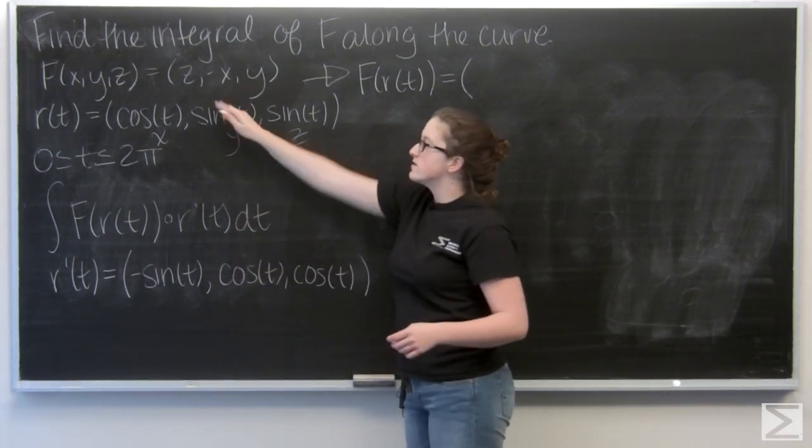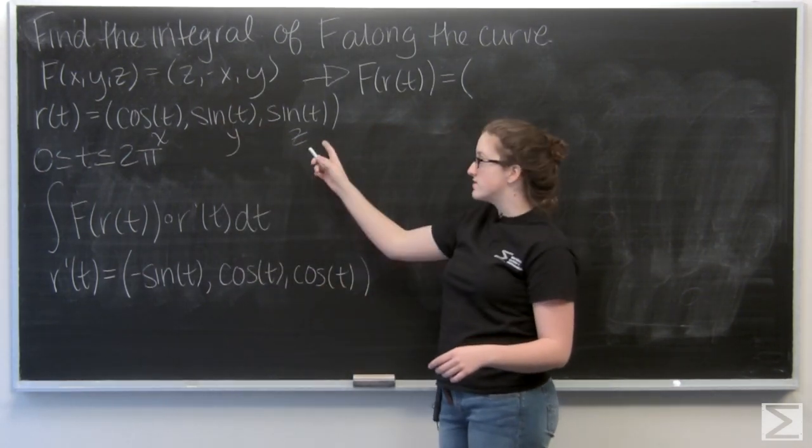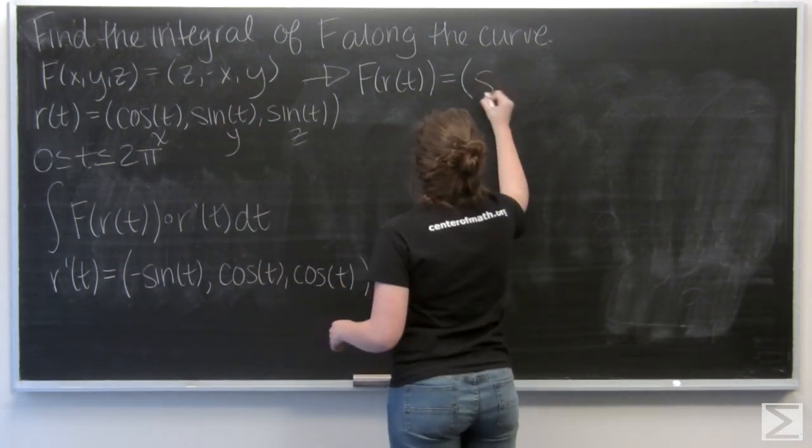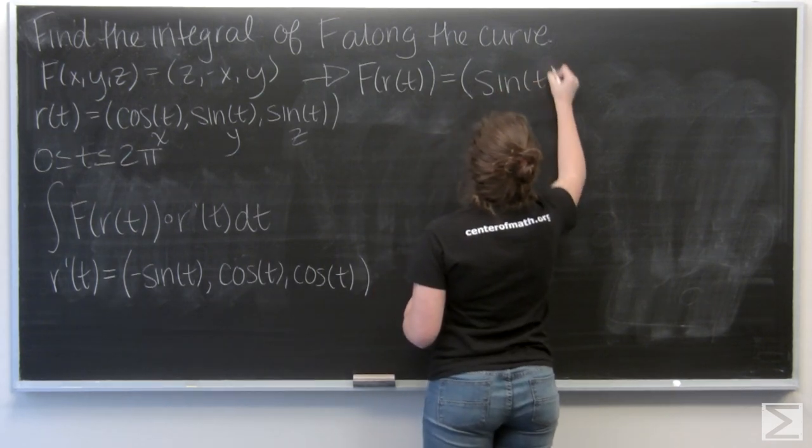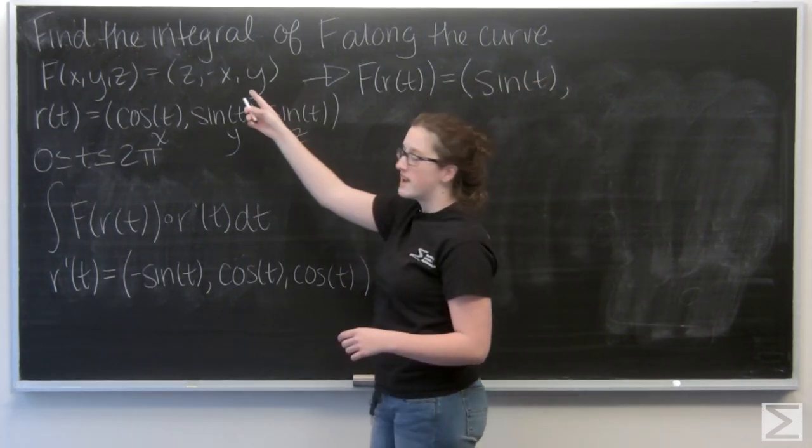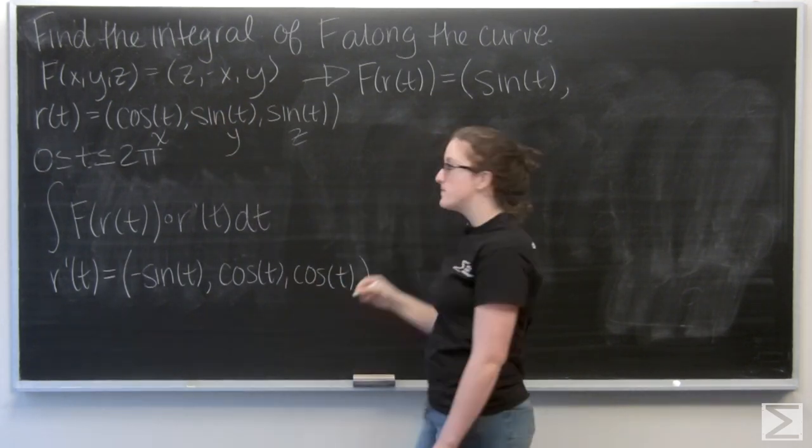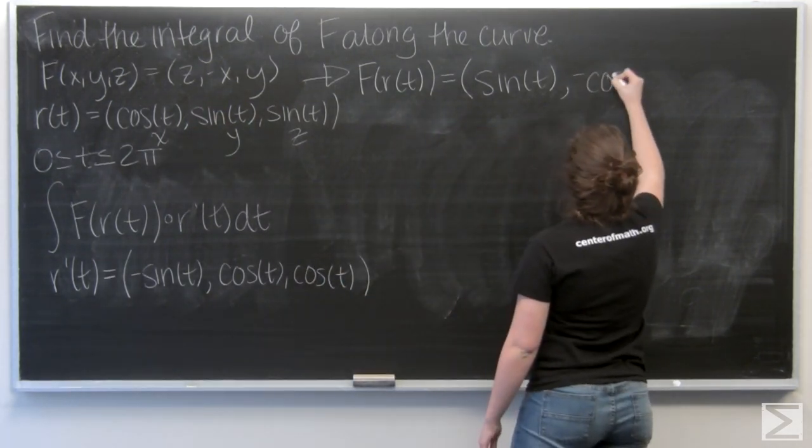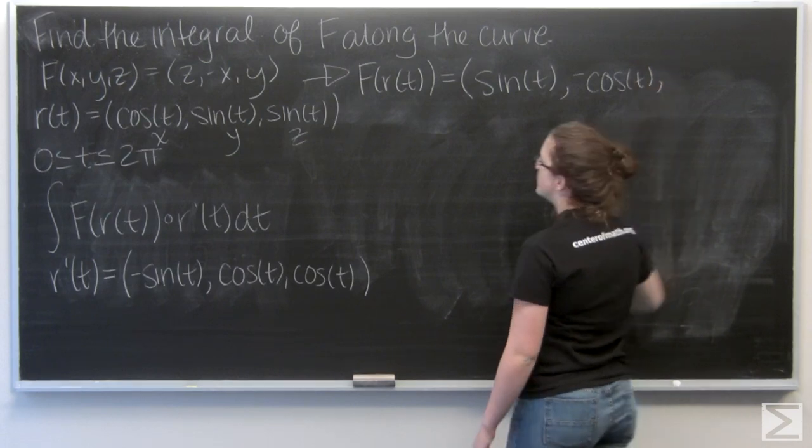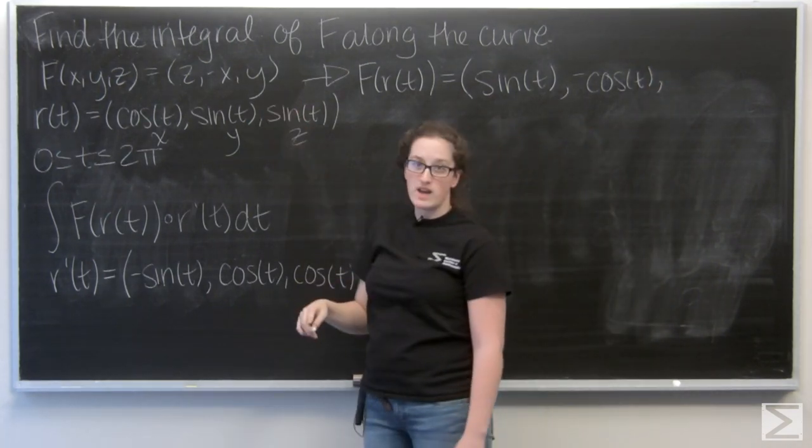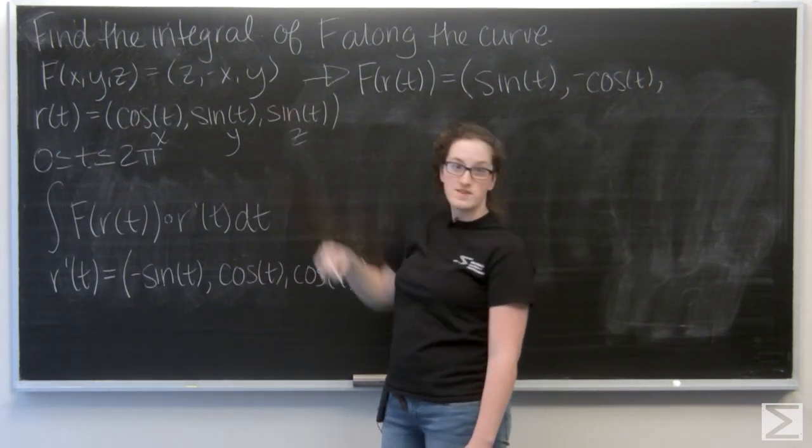So my first term in f is z, so that's just going to be sine t. My second term is negative x, so I'm going to have negative cosine t. And then my third term is y, so I'm just going to have sine t.